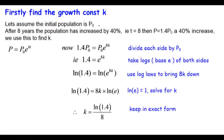First, we have to find k. Let's assume the initial population is P₀. After eight years, the population has increased by 40%, i.e., when t equals 8, the population is 1.4 times P₀, which is 40% bigger than the initial population. We need to find k.